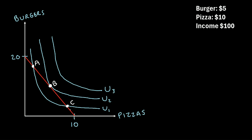This red line represents your budget line — every combination of burgers and pizzas that you could buy given that your income is $100. Now the question becomes: at what point on this graph — point A, B, or C — do you maximize your utility?